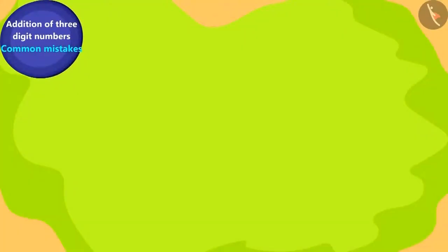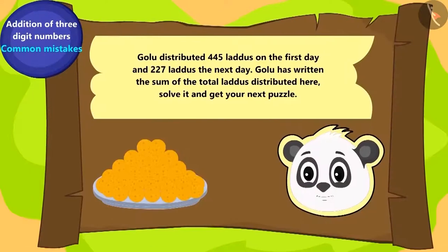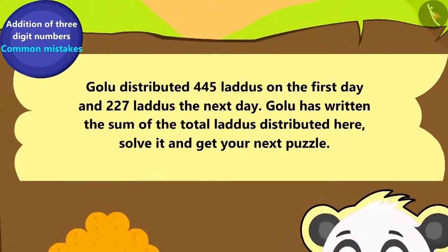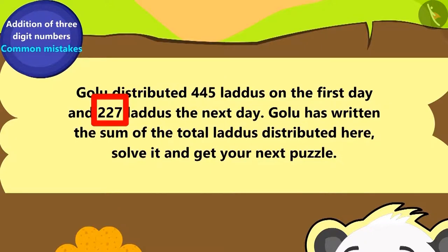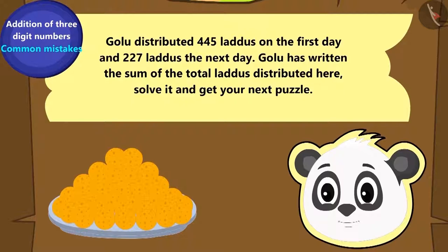Here is Bablu's first puzzle. Golu distributed 445 laddus to his friends on the first day and 227 laddus the next day. Golu has written the sum of the total laddus distributed here. Solve it and get your next puzzle.